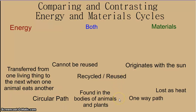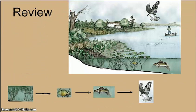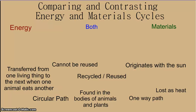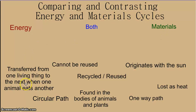Here's the main part of this learning target: you need to be able to compare how energy moves in a food chain — from one organism to the next, being lost along the way — to the way materials like carbon move in a cycle, going from one place to the next, never being lost or destroyed. On this page you'll see statements such as 'originates with the sun,' 'lost as heat,' and 'one-way path.' Pause the video now and arrange these statements under energy, materials, or both, then come back and I'll show you the correct arrangement.